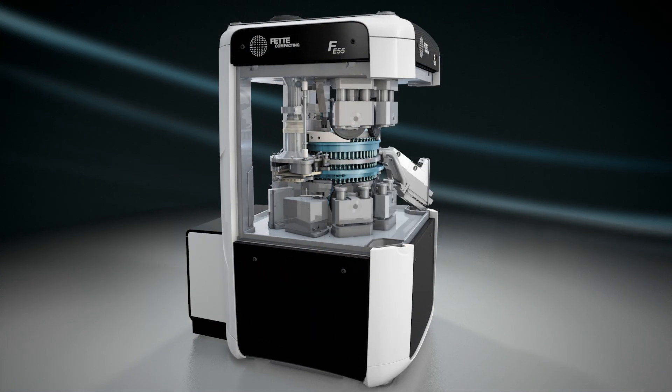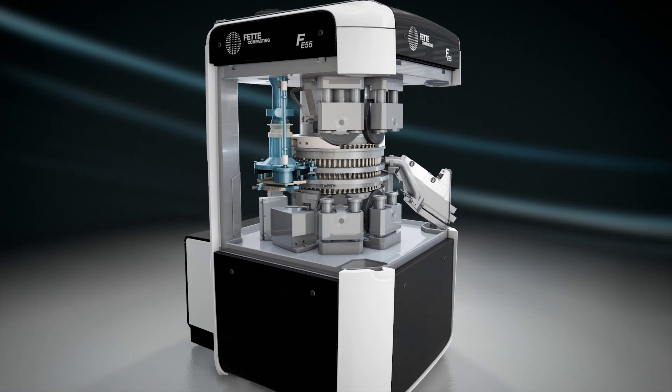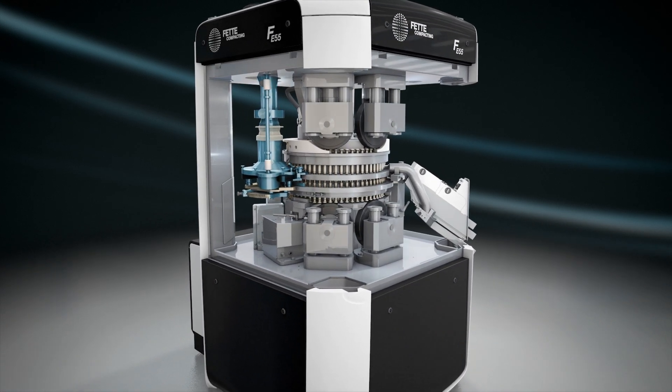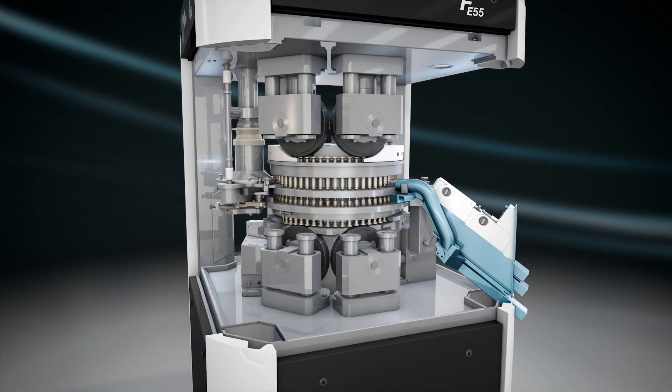In the tablet press area are the turret with the punches, the segments, a filling device, identical compression stations for pre- and main compression, and the tablet chute.